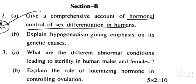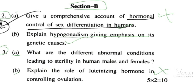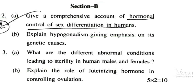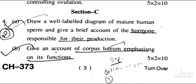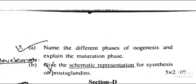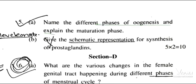Next is Section B. Questions include: a comprehensive account of the hormonal control of sex differentiation in humans; explain hypogonadism with emphasis on its genetic cause; draw a labelled diagram of a mature human sperm and give a brief account of the hormones responsible for its production; give an account of the corpus luteum and its function; name the different phases of oogenesis and explain the maturation phase; and a schematic representation of the synthesis of prostaglandins.